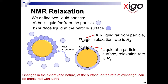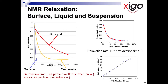Let's look at NMR relaxation when we have a surface, liquid, and suspension. There are essentially three relaxation phenomena occurring at the same time. The first is for the bulk liquid, and then we have one for the surface. The relaxation of the surface is exceptionally fast.